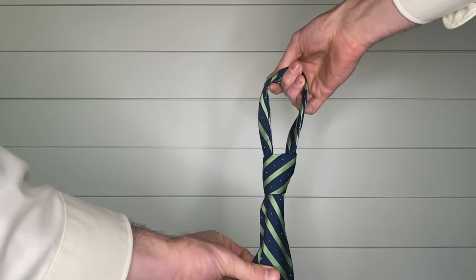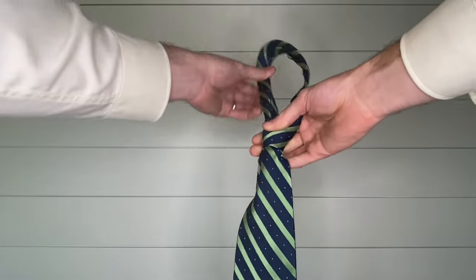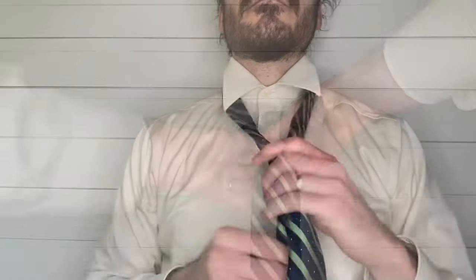Pull the tie down to tighten the knot. Then you can loosen it here. Put that around your collar and cinch it up.